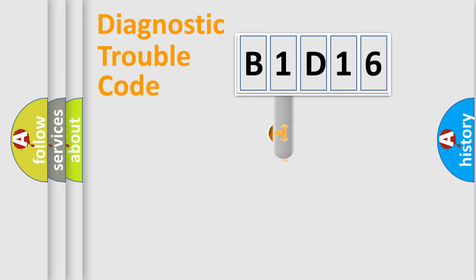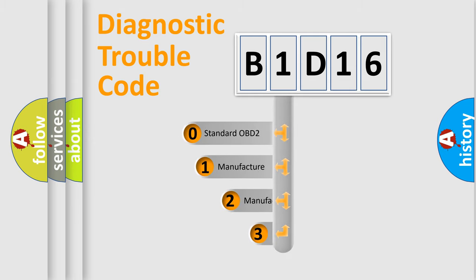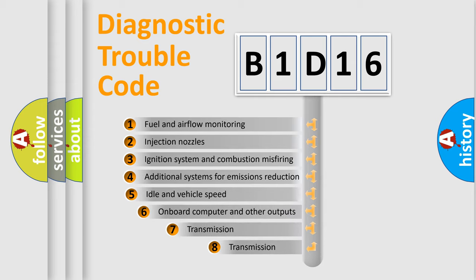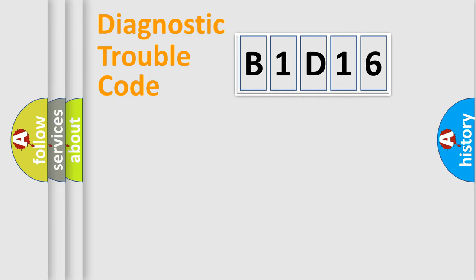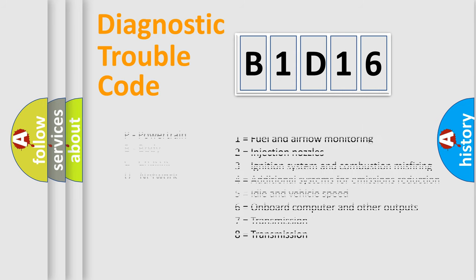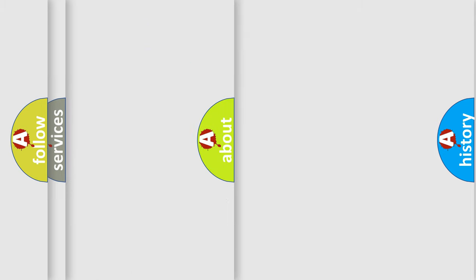This distribution is defined in the first character of the code. If the second character is expressed as zero, it is a standardized error. In the case of numbers 1, 2, or 3, it is a manufacturer-specific error expression. The third character specifies a subset of errors. This distribution is valid only for the standardized DTC code, and only the last two characters define the specific fault of the group.